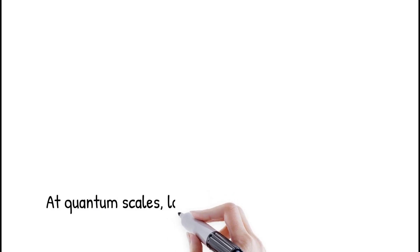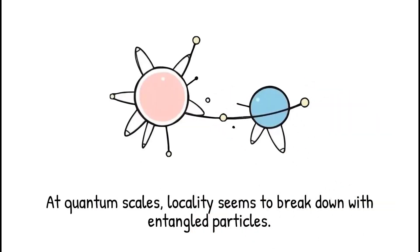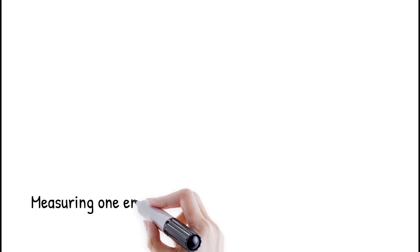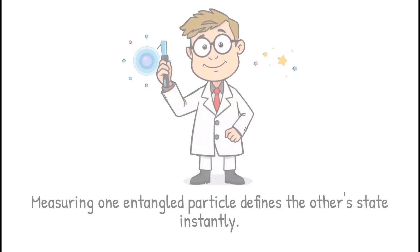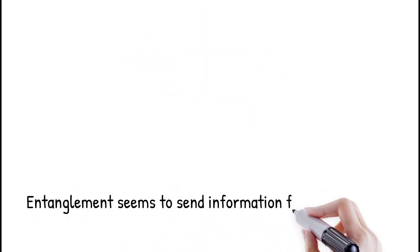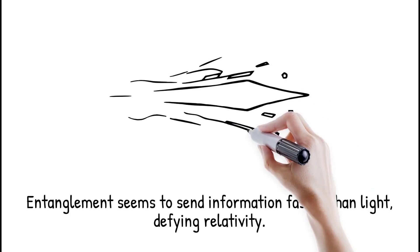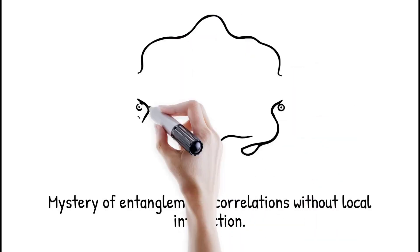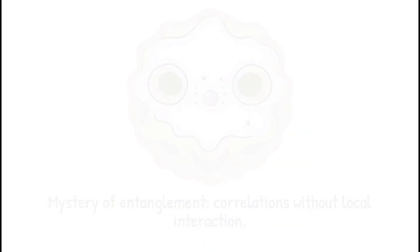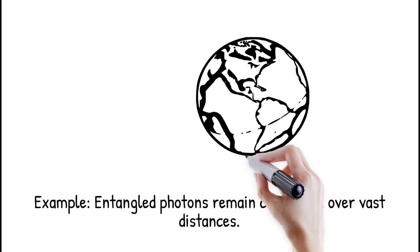At quantum scales, the principle of locality appears to break down. Entangled particles share correlated states no matter how far apart they are. Measuring one particle instantly defines the state of the other, even across light years. This effect seems to transmit information faster than light, defying relativity. Yet no usable signal can actually be sent this way, keeping relativity intact. The mystery is how entanglement correlations emerge without local interaction. Two entangled photons created in a lab remain correlated even if one is sent to the moon and the other stays on Earth. It is like rolling two dice in different rooms and always finding their numbers perfectly matched.